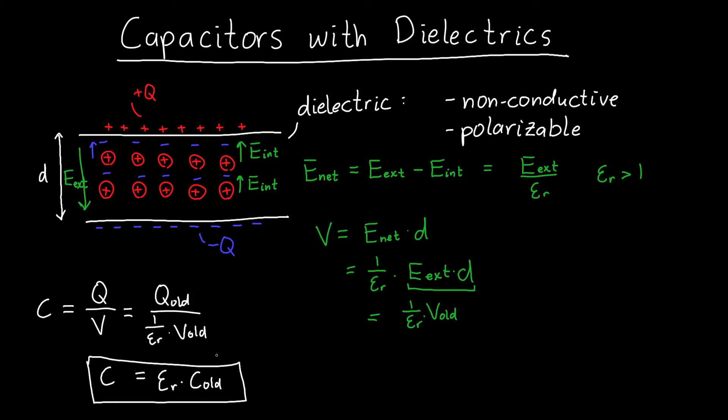What this means is if I increased the voltage, I could now get a much higher charge than I could with my old capacitor. So if I increased the voltage back to what it was originally, I'd get a much larger charge.